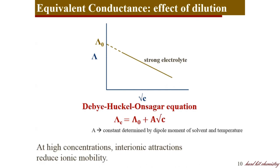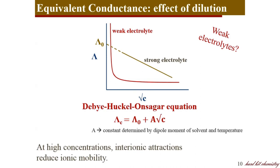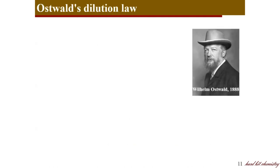But this is only for strong electrolytes. For weak electrolytes, the observation is different. As concentration decreases, equivalent conductance increases only very slowly, and at concentration close to zero it increases very dramatically. This raises the question: why do weak electrolytes behave entirely differently from strong electrolytes, and how can we calculate the λ₀ value for weak electrolytes?